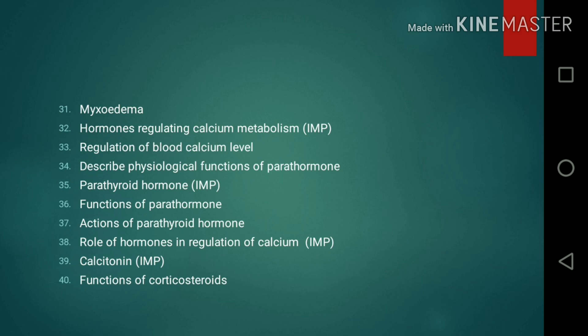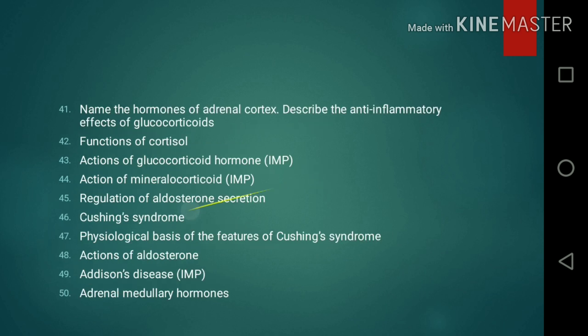Short notes continued: 32. Hormones regulating calcium metabolism. 33. Regulation of blood calcium level. 34. Describe physiological functions of parathormone. 35. Parathyroid hormone. 36. Functions of parathormone. 37. Actions of parathyroid hormone. 38. Role of hormones in the regulation of calcium. 39. Calcitonin. 40. Functions of corticosteroids. 41. Name the hormones of the adrenal cortex; describe the anti-inflammatory effects of glucocorticoids. 42. Functions of cortisol. 43. Actions of glucocorticoid hormone.